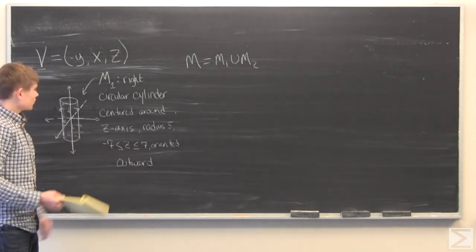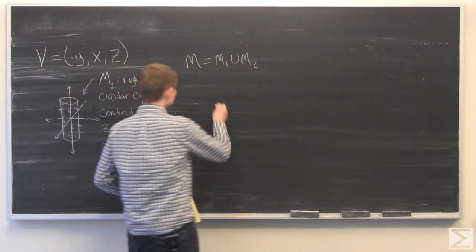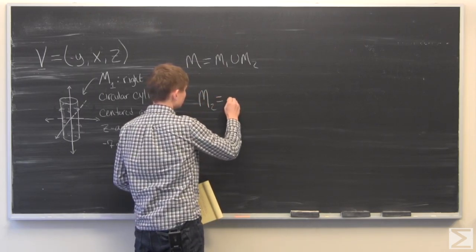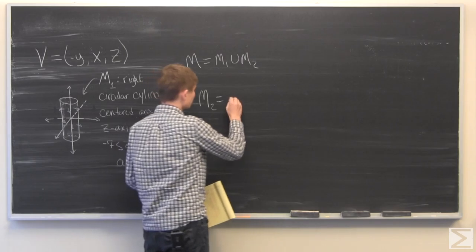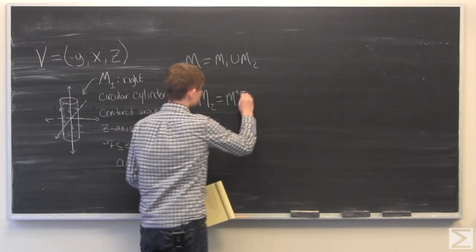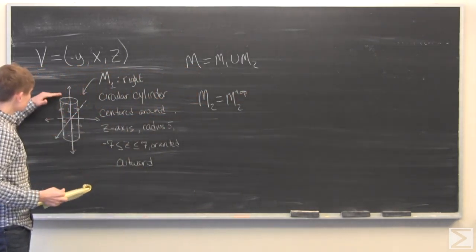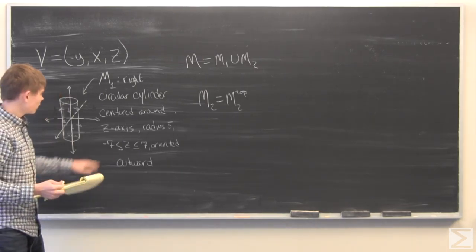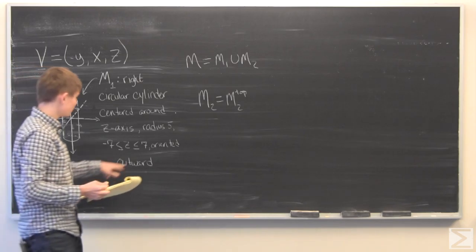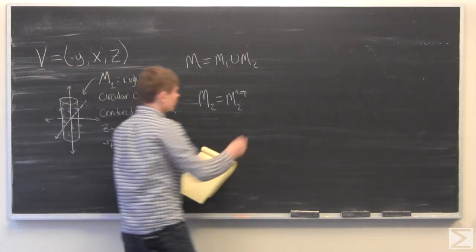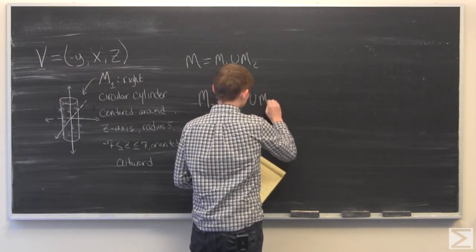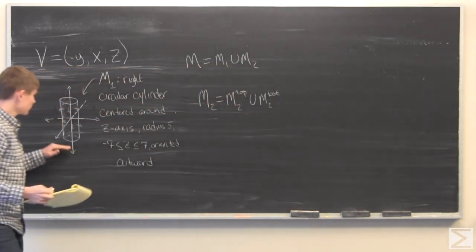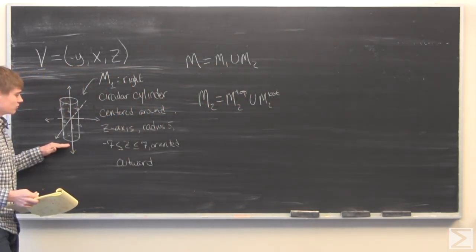The closing surface M2, it should be clear, is going to be a union of two surfaces: M2 top, where this top part is a disk of radius 5 at Z equal to 7, and M2 bottom, which is also a disk of radius 5 but it's at Z equal to negative 7.